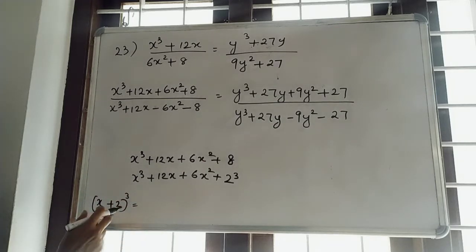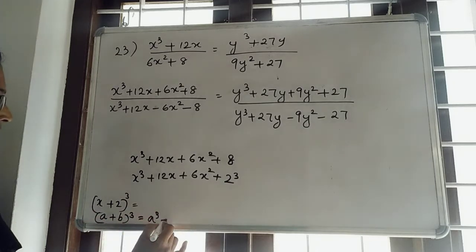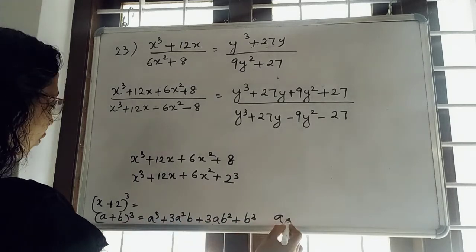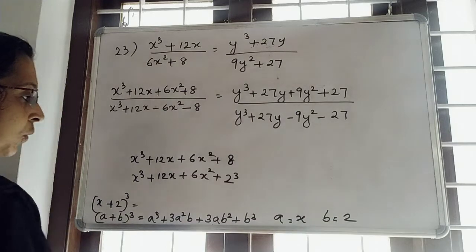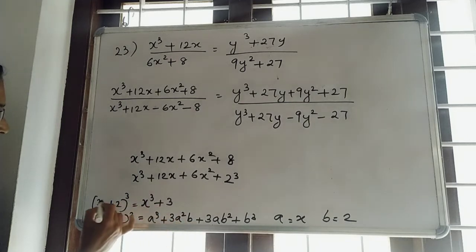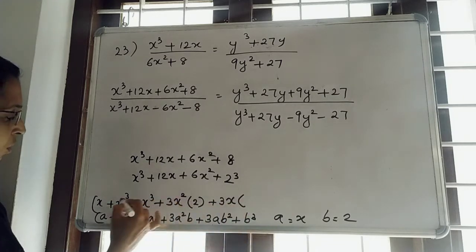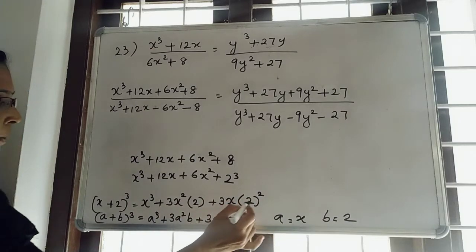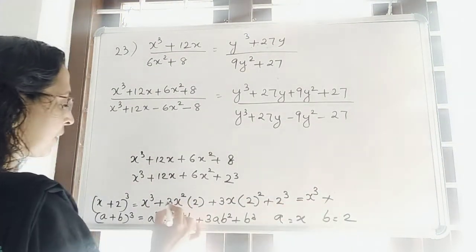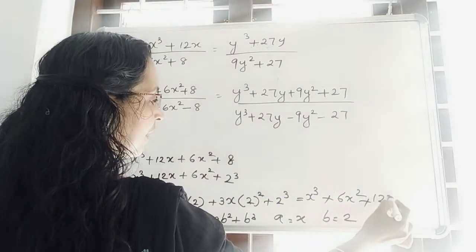What will be (x + 2)³? This is in the form of (a + b)³. The formula is a³ + 3a²b + 3ab² + b³. Here a stands for x and b stands for 2. So, (x + 2)³ = x³ + 3x²·2 + 3x·4 + 8, which gives x³ + 6x² + 12x + 8.